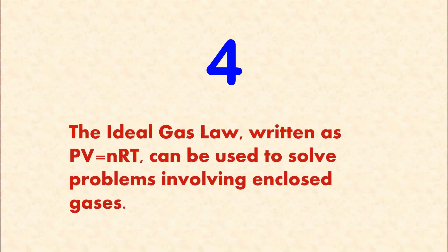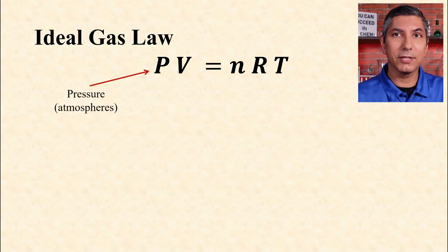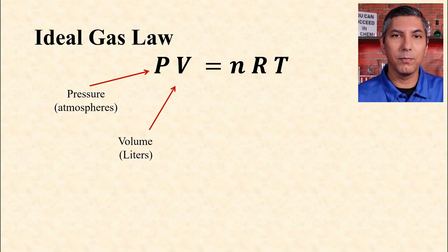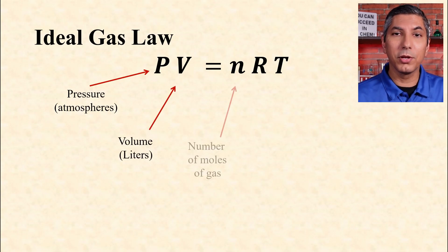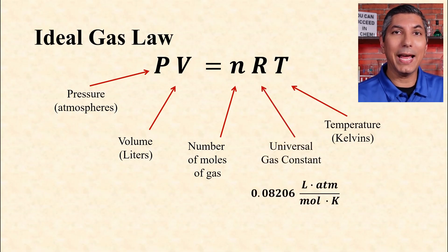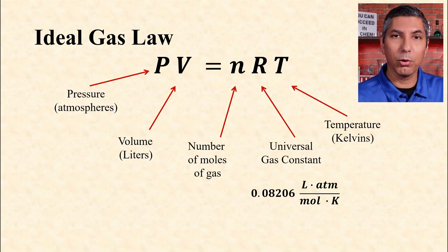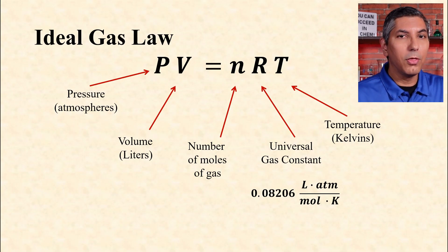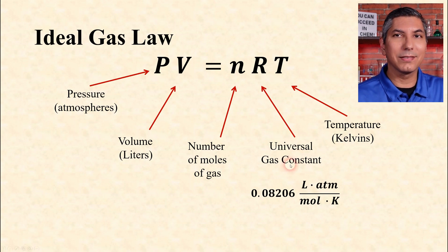Number 4. The Ideal Gas Law, written as PV = nRT, can be used to solve problems involving enclosed gases. P stands for pressure in atmospheres, V stands for volume in liters, n stands for the number of moles of gas, and T is the temperature in kelvins. R is the universal gas constant, equal to 0.08206 liter·atmospheres per mole·kelvin. As long as you know three of the variables, you can calculate the fourth, and R does not change.